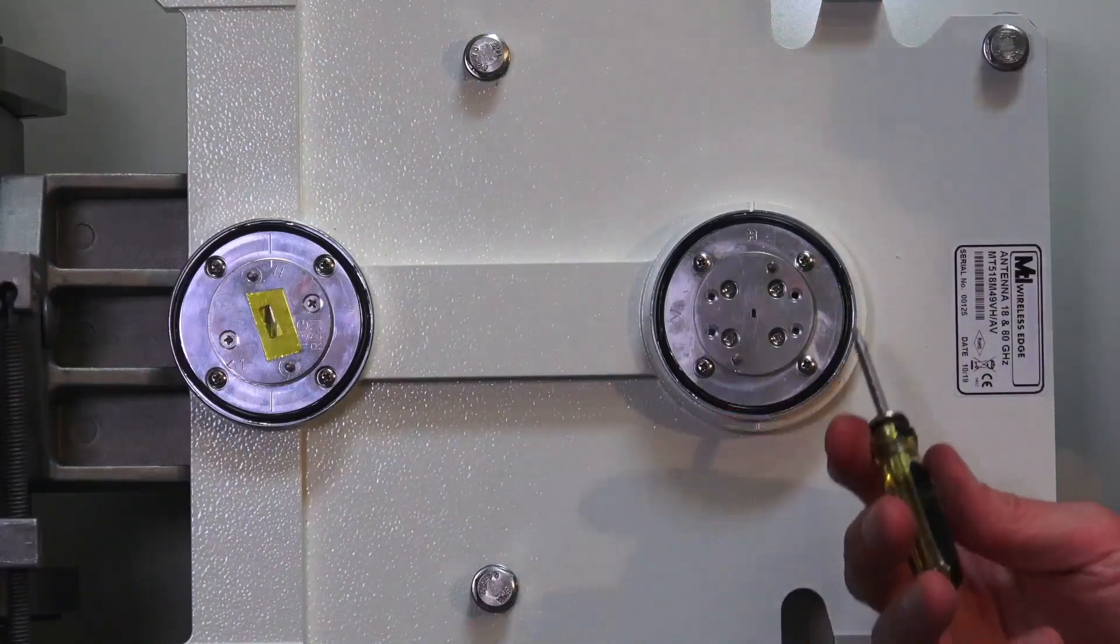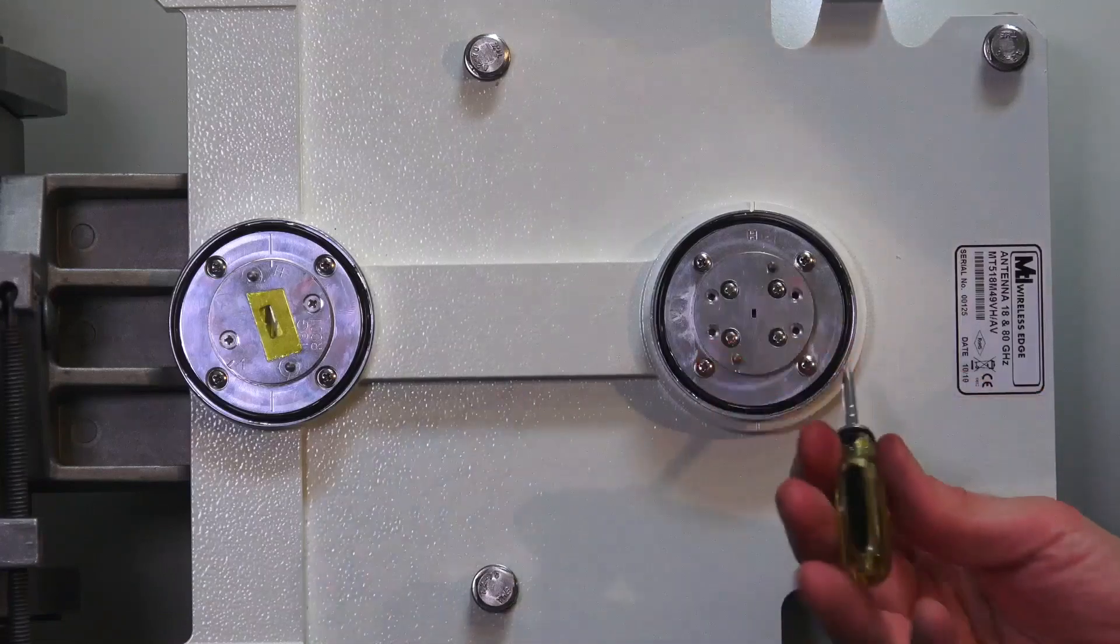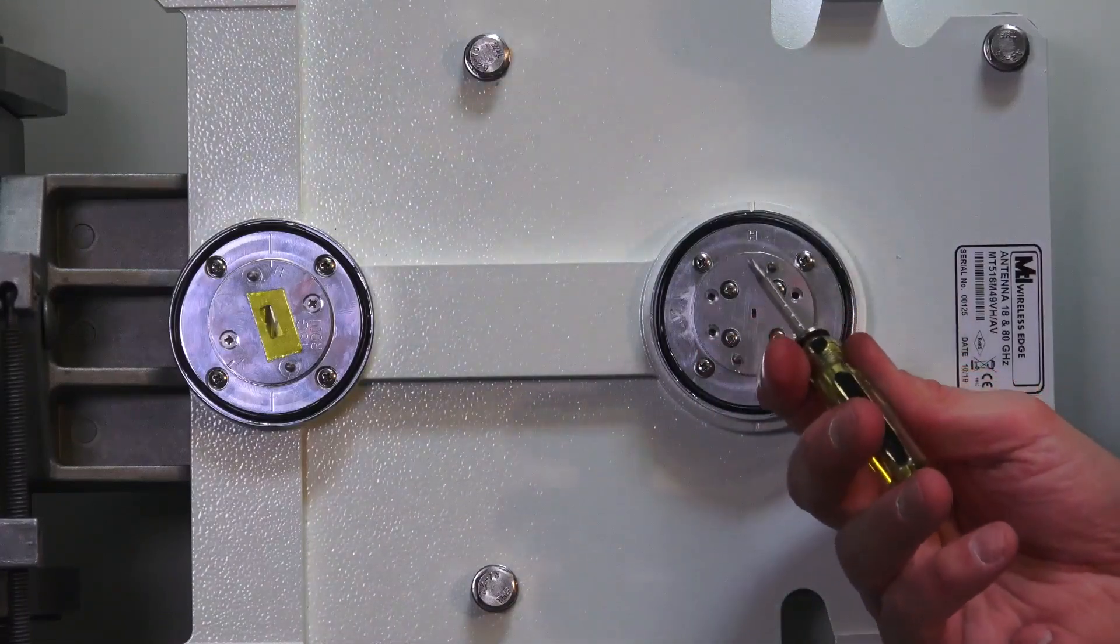Underneath there, there's four more screws which we need to remove. Once you've got these four screws loose, there's four more outer screws that also need to be removed.